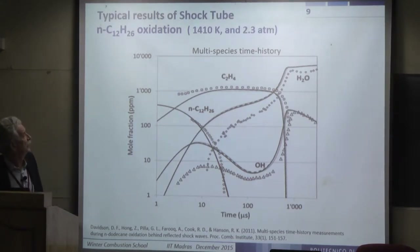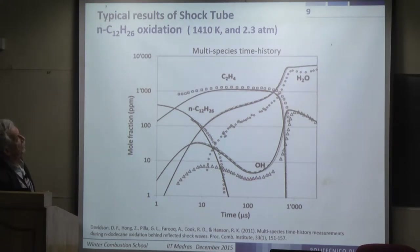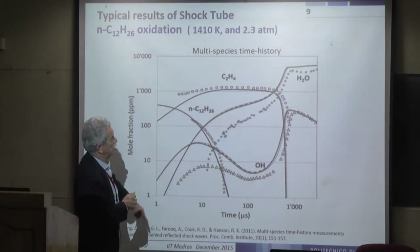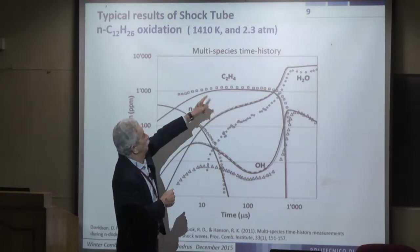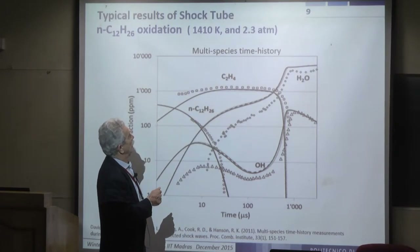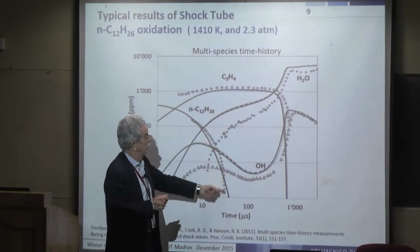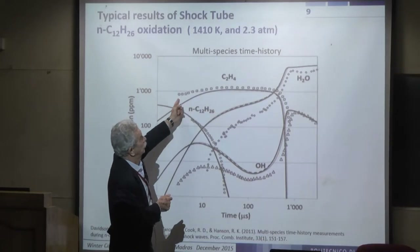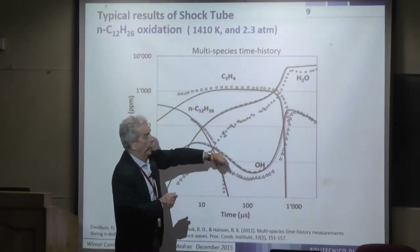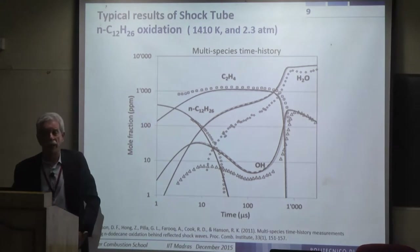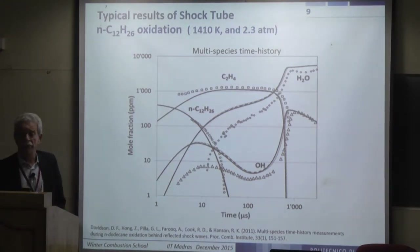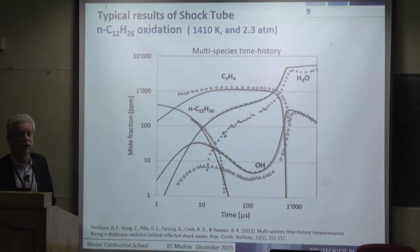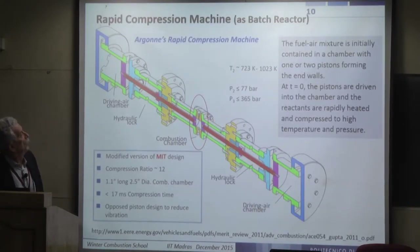Further information from shock tube experiments includes multi-step, multi-species time histories. Groups at Stanford are able to identify the presence of different species over time — not only the fuel (normal dodecane) but also formation of water, CO, and radicals like OH and H — using laser diagnostics.